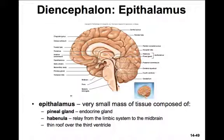Go ahead right now — pull out a pen and paper and separate out the functions of the thalamus and the hypothalamus. What's the role in general of the thalamus and each of its different regions? And what is the role of the hypothalamus? How is it involved in translating signals from the nervous system to the endocrine system?